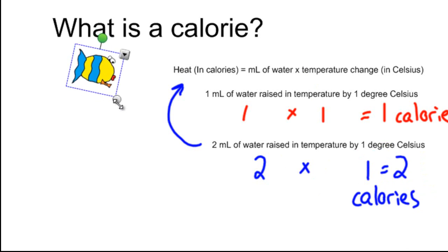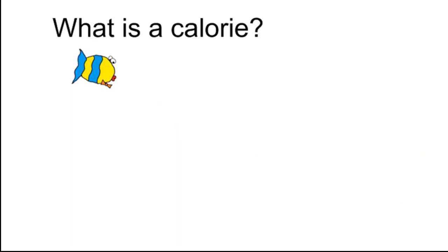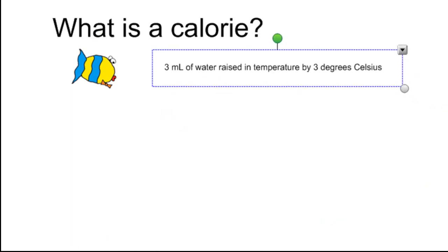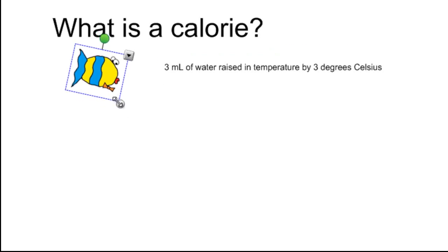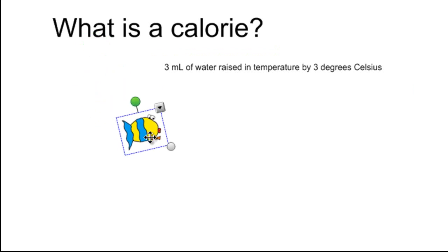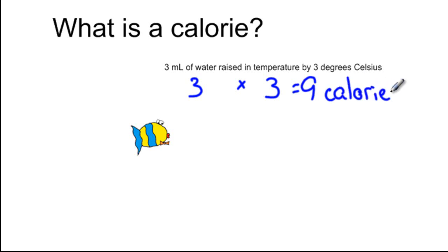You got it? I got it! Let's do a harder one. Great attitude, Fred. Here we go. Let's say we have three milliliters of water raised in temperature by three degrees Celsius. Here's what you would do. No, no. Let me do it, Mr. Fish. I don't even need the formula. You've got three milliliters of water times a three degree temperature change equals nine calories. Well, that's great, Fred. I think you've got it.